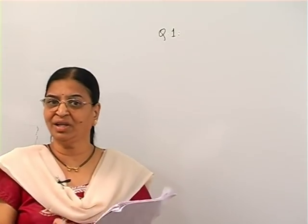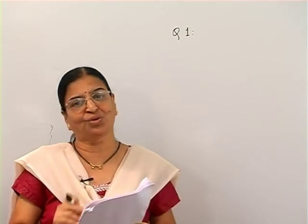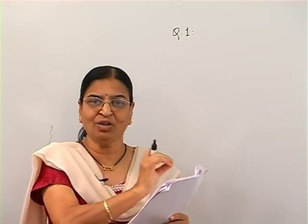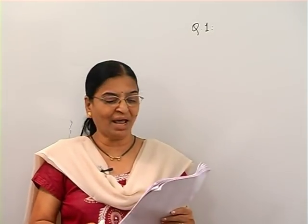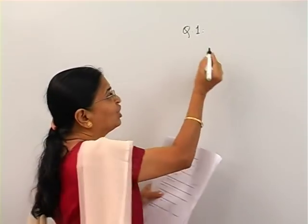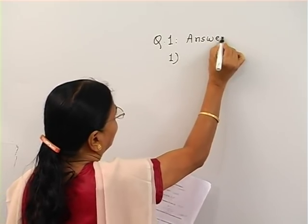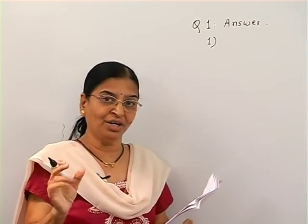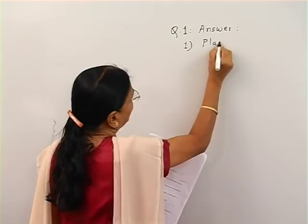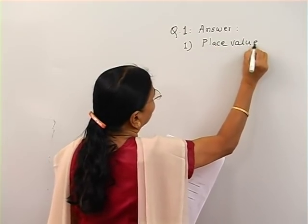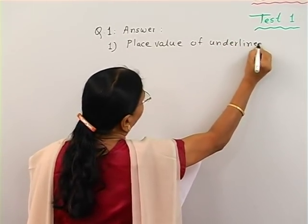So first question — I will read out the first question and only write down whatever you are supposed to write down. You need not write down the full question, only the key point. So write the place value of the underlined digit. In short, you will write the heading of the question: place value of underlined digit.